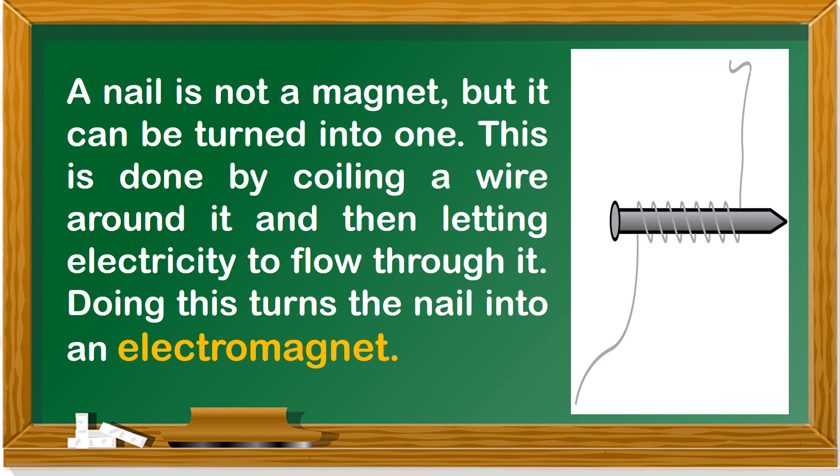A nail is not a magnet, but it can be turned into one. This is done by coiling a wire around it and then letting electricity flow through it. Doing this turns the nail into an electromagnet.